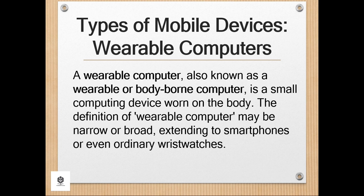Wearables may be for general use, in which case they are just a particularly small example of mobile computing. Alternatively, they may be for specialist purposes, such as fitness trackers. They may incorporate special sensors, such as accelerometers, thermometer, and heart rate monitors, or novel user interfaces, such as Google Glass and optical head-mounted displays controlled by gestures. It may be that specialized wearables evolved into general all-in-one devices, as happened with the convergence of PDA and mobile phones into smartphones.